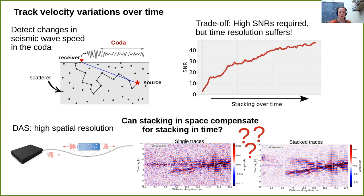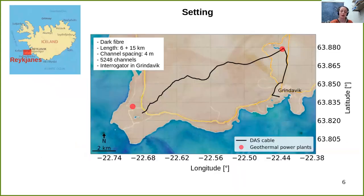We try to answer these questions by carrying out a systematic study whose structure, methods, and results will be presented on the following slides. The study area is Reykjanes, a small region located southwest of Iceland, where GFZ Potsdam carried out DAS measurements in 2020 with a fiber optic cable that was originally used for telecommunication purposes.